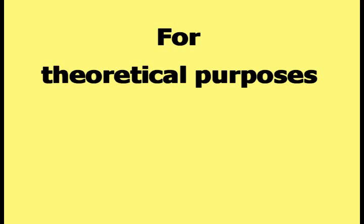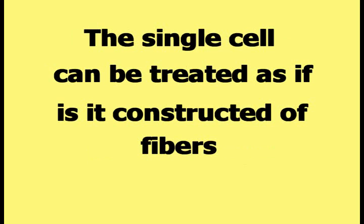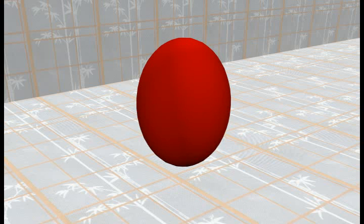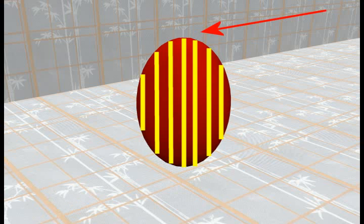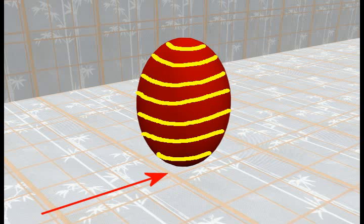For theoretical purposes, the construction of the single cell can be described in other ways. The single cell can be treated as if it is constructed of fibers that are put together in various different patterns. The object in this picture will represent a single cell. One type of fiber pattern would be a simple grid of straight fibers running from the bottom of the cell to the top of the cell. Or the fibers could follow a spiral pattern beginning at the top of the cell, then spiraling down to the bottom of the cell.